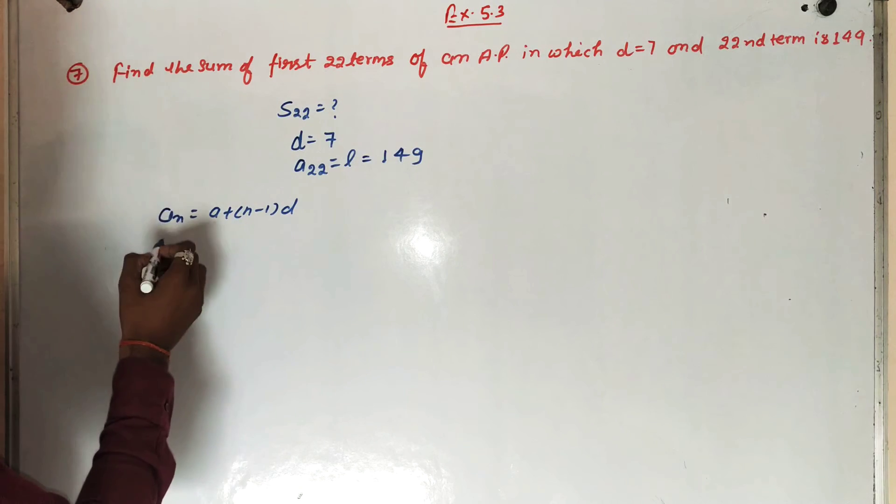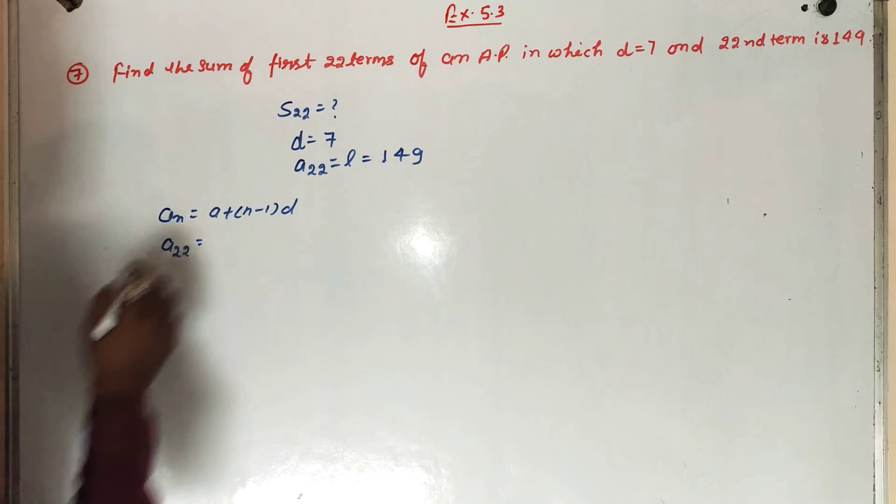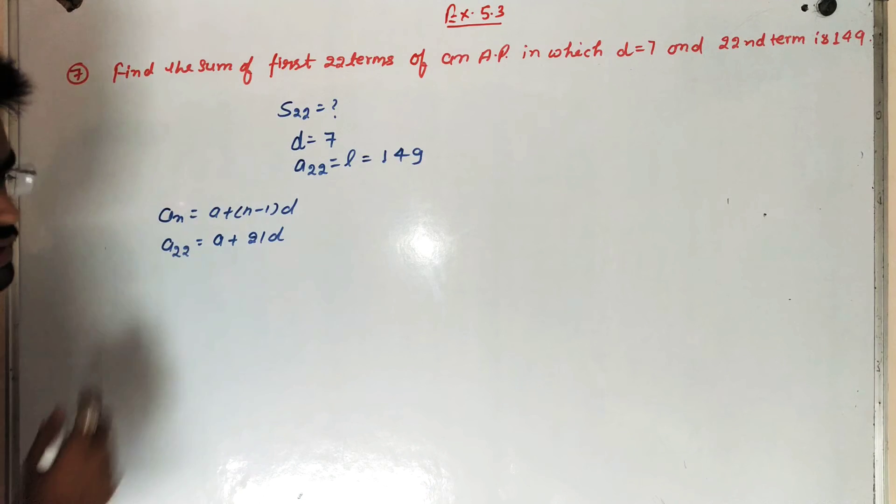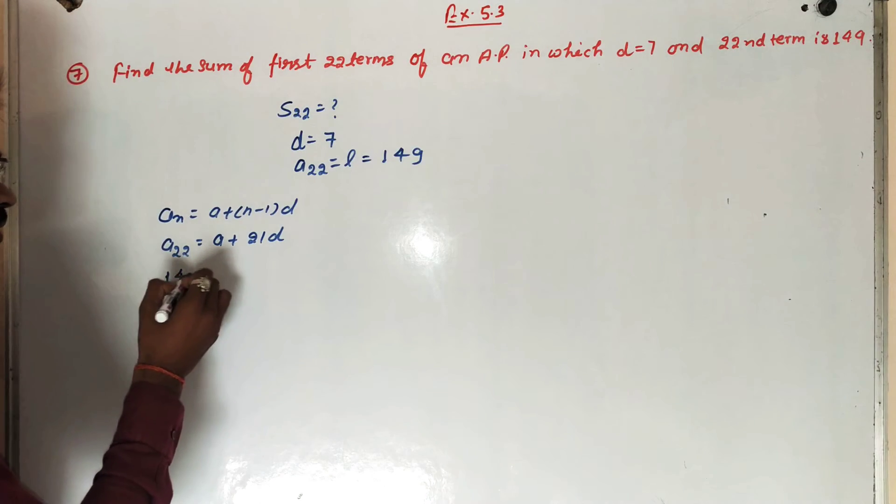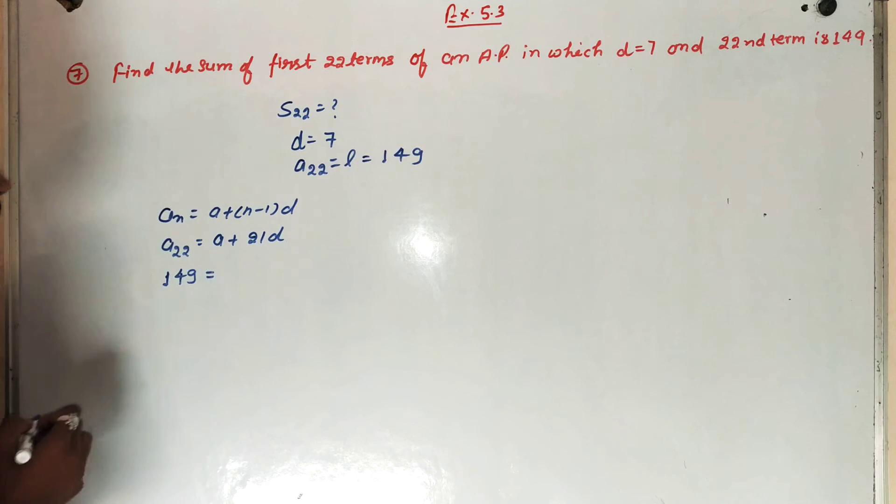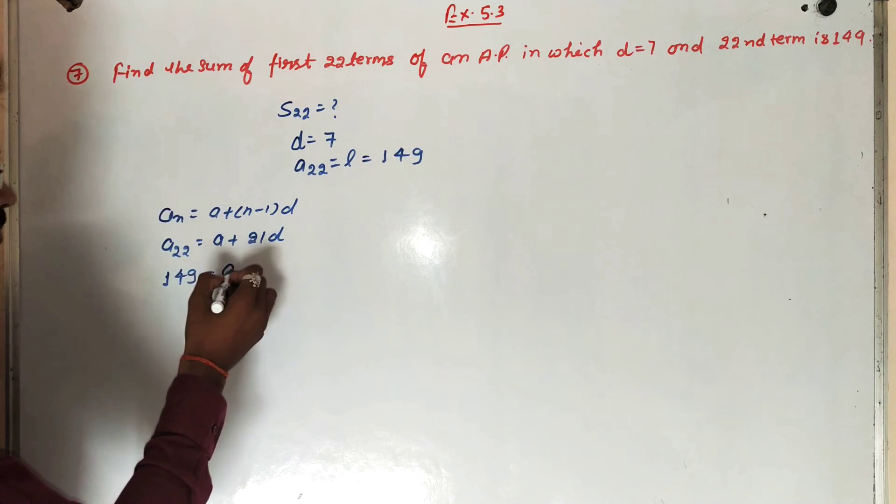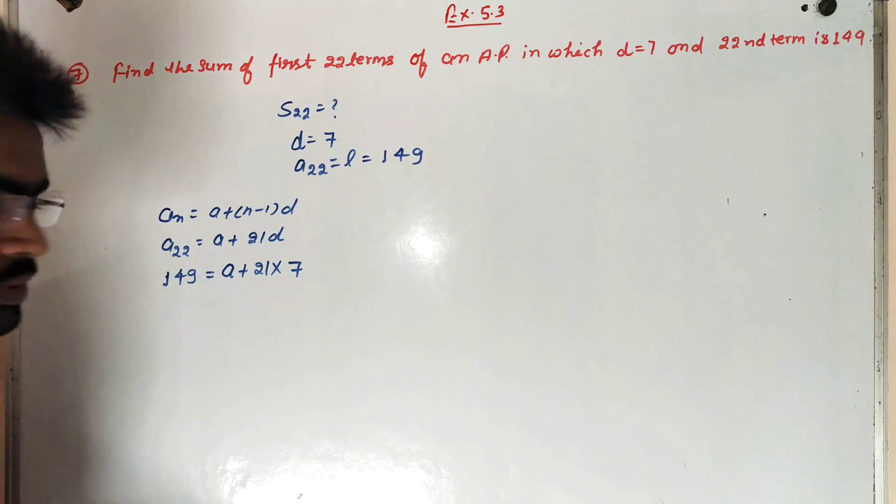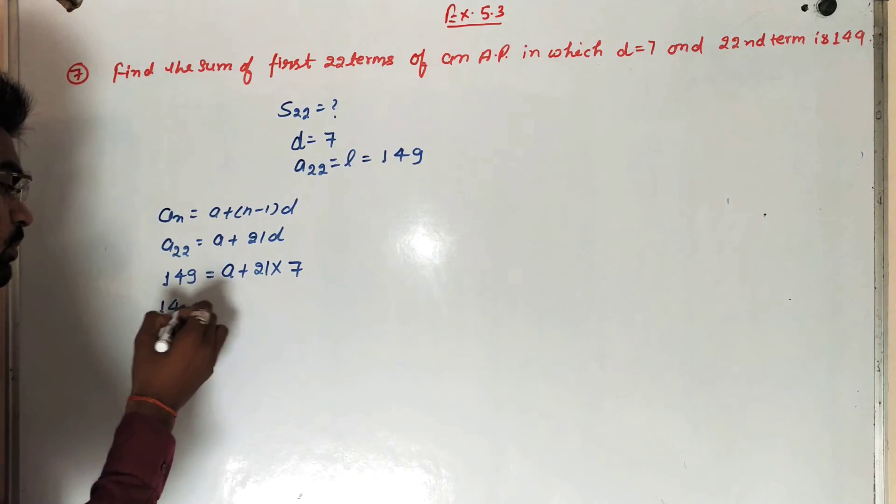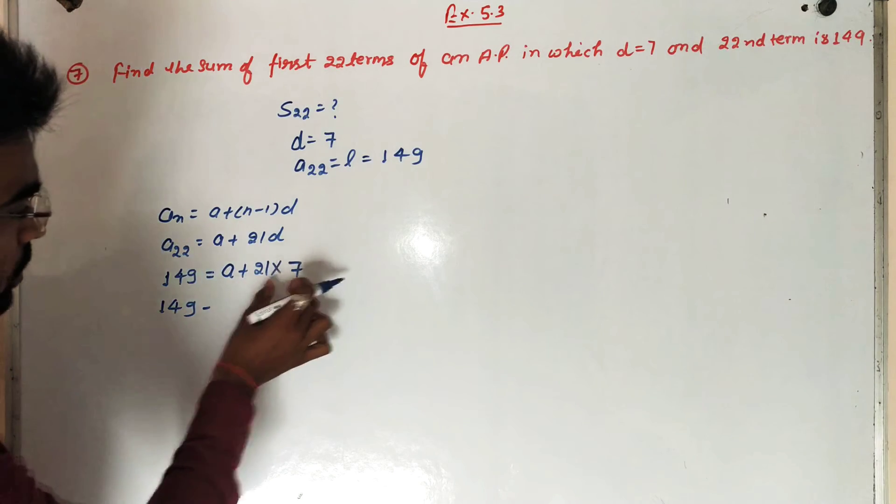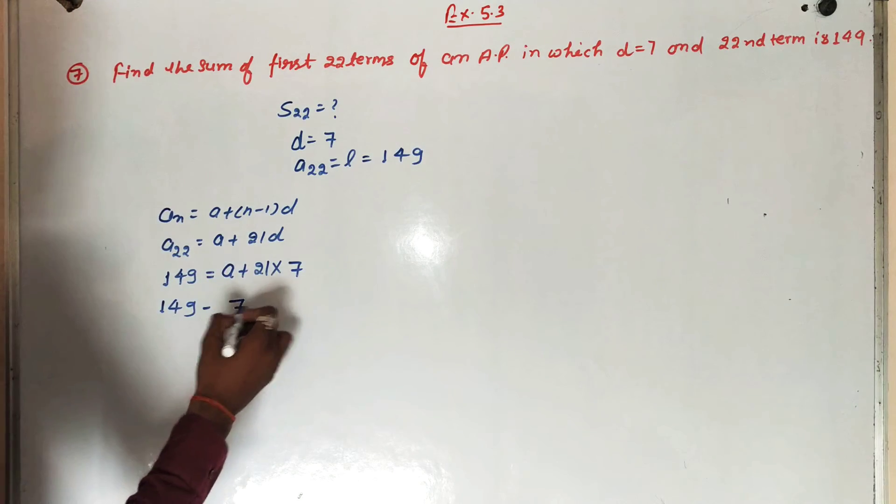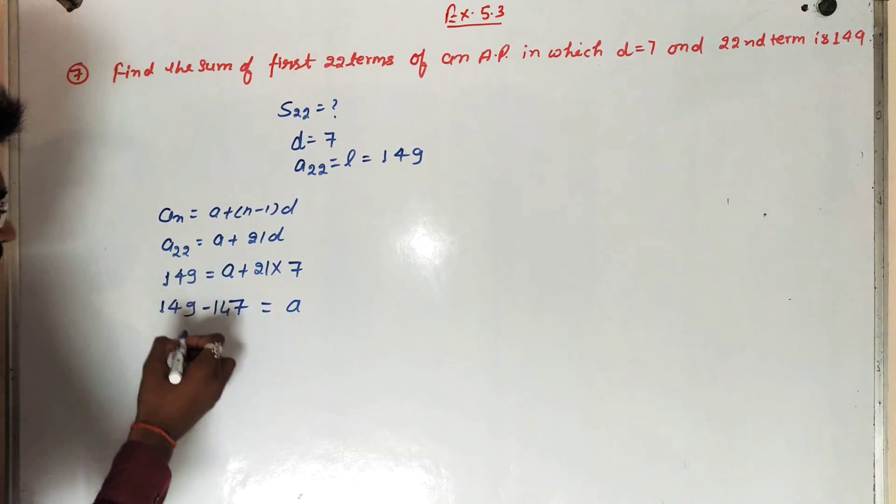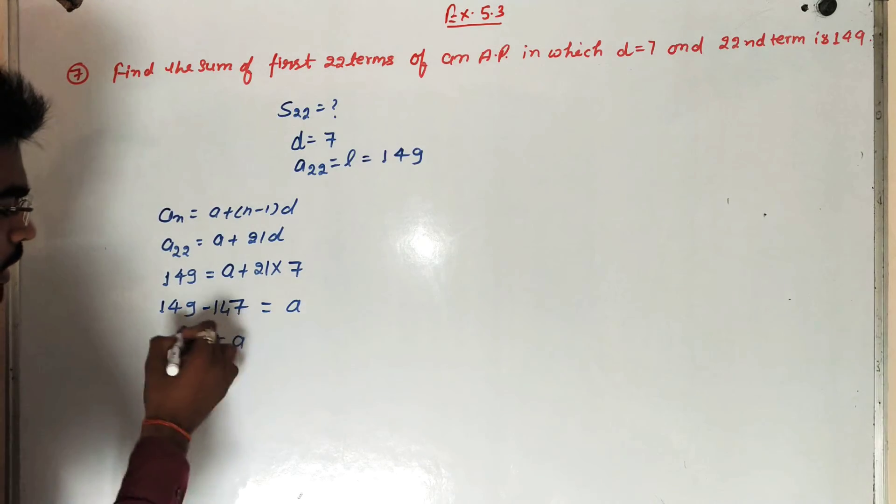A22 is equal to A plus 21 into D. 149 equals A plus 21 times 7. 149 minus 147 is equal to A. So A equals 2. That means first term is 2.